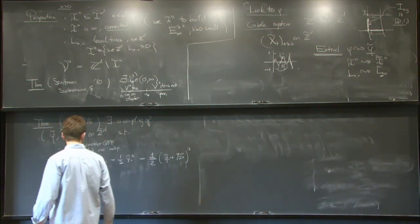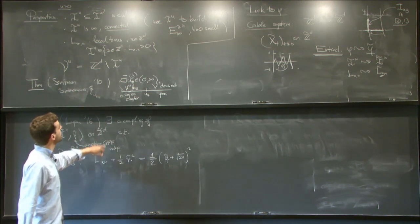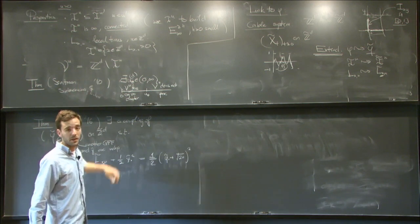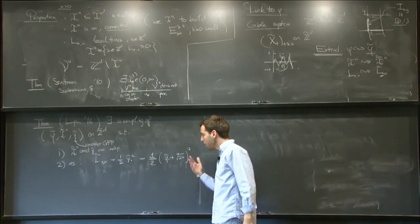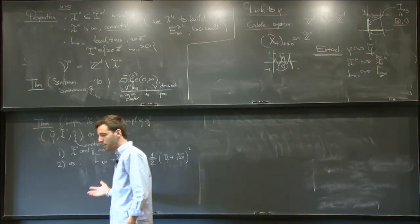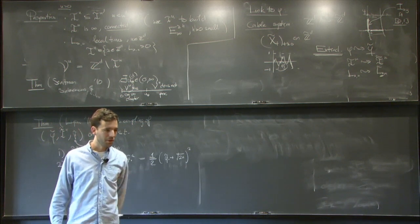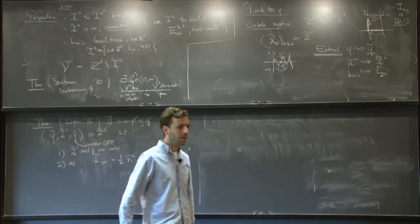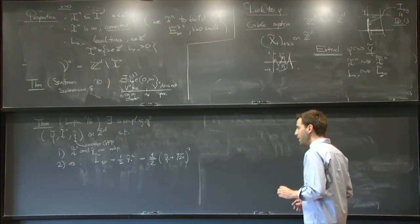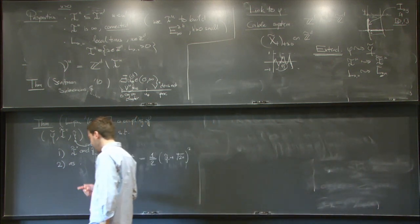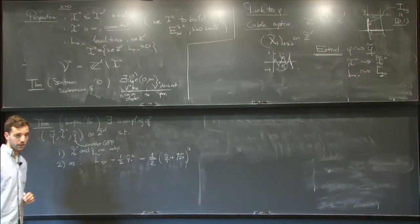The equality in distribution was already known and was done by Snitman, based on an earlier paper of Marcus, Rosen, Eisenbaum, Kaspi, and Le Jan — they did it for one random walk. You can compute Laplace functionals on both sides since everything is explicit: the free field has an explicit Laplace functional and so does this guy as a Poissonian loop soup. The merit of Lupu is to have lifted this equality in distribution to an almost sure equality. The difficulty is the square on the right-hand side: the issue is really to recover the sign of the field.